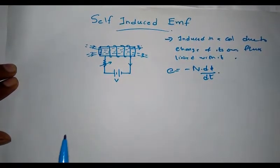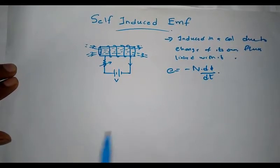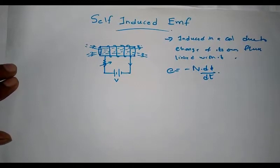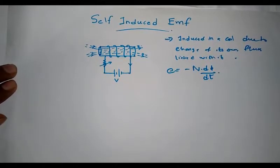This EMF is known as self-induced EMF. The property of the coil to induce an EMF back into itself is known as inductance, and the function of inductance is to oppose the change in current, as a result of Lenz's law.